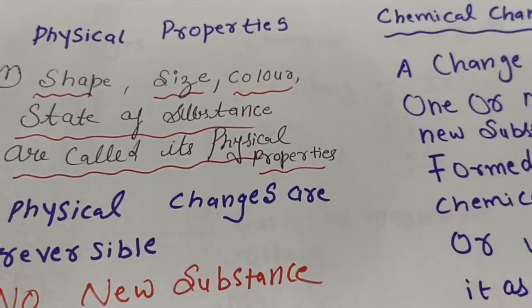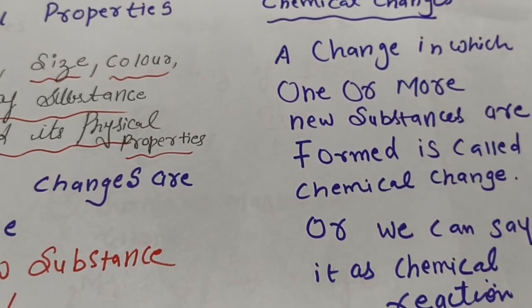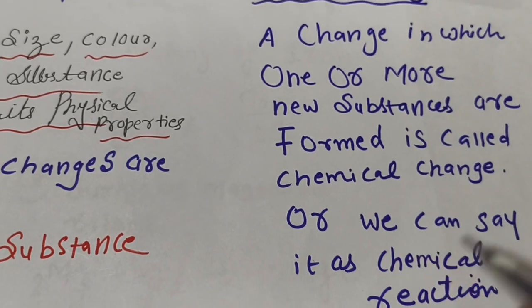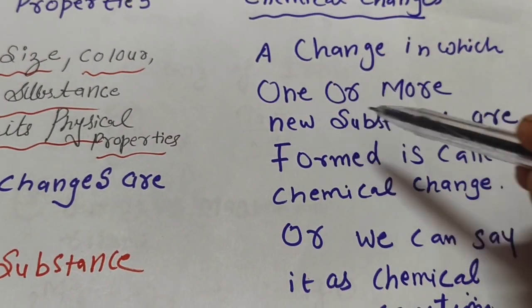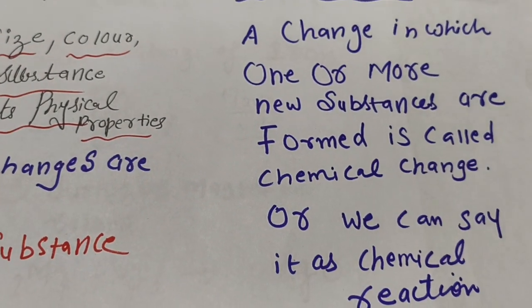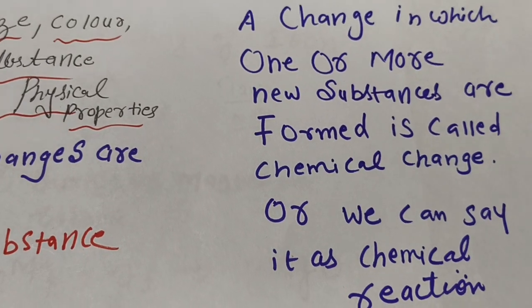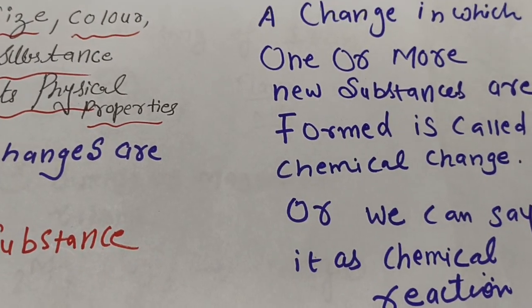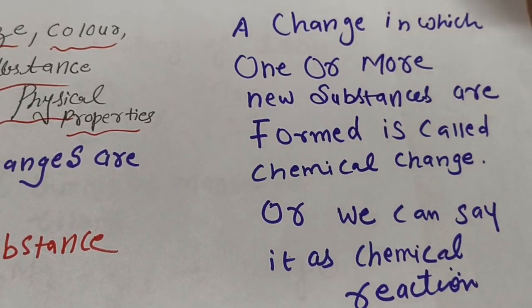Now if we talk about chemical changes: a chemical change is one in which one or more new substances are formed. When we talk about chemical changes, definitely chemical reactions take place.